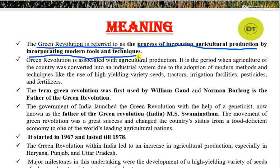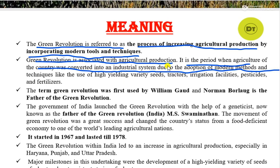Green revolution is the period when agriculture of the country was converted into an industrial system due to the adoption of modern methods and techniques like the use of high yielding variety seeds, tractors, irrigation facilities, pesticides, fertilizers, etc. Essentially, conventional farming was converted into a modern method of agriculture.